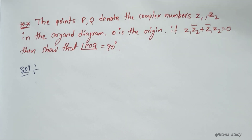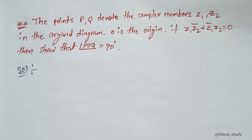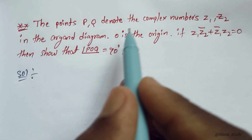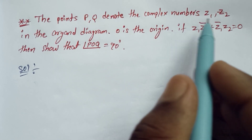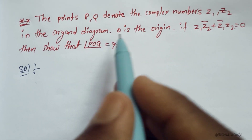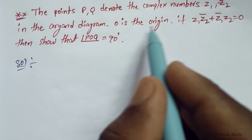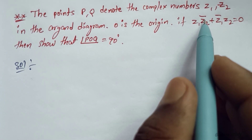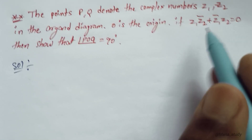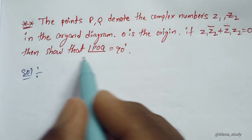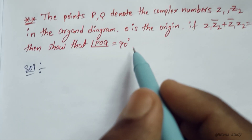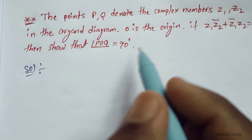Let me know in the video. The question is: the points P and Q denote the complex numbers Z1 and Z2 in the Argand Diagram, and O is the origin. If Z1·Z̄2 + Z̄1·Z2 equals 0, then show that angle POQ equals 90 degrees.